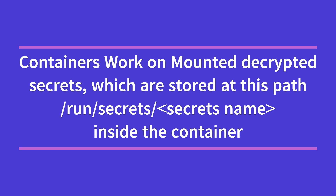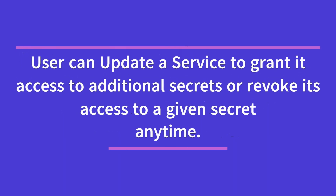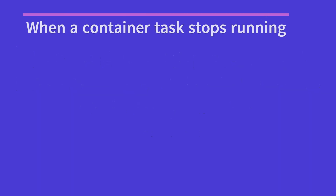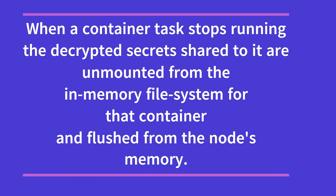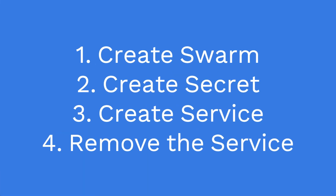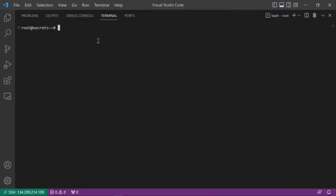It is possible for a user to update or even revoke a secret. When a container stops or is killed, the secret gets detached from the in-memory storage of the container, so it's no longer accessible. In this tutorial we'll create a swarm, create a secret using both the file method and the CLI method, then create a service, and finish up by removing the service.